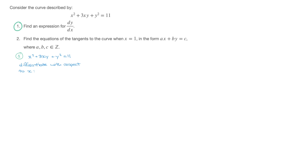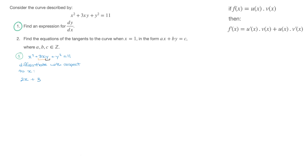Going from left to right, the derivative of x squared is 2x. We then add the derivative of 3xy. To differentiate 3xy, we need to use the product rule — we think of this as 3x multiplying y of x. Using the product rule, we get the derivative of 3x times y, which is 3y, plus 3x times the derivative of y, which is 3x dy/dx.